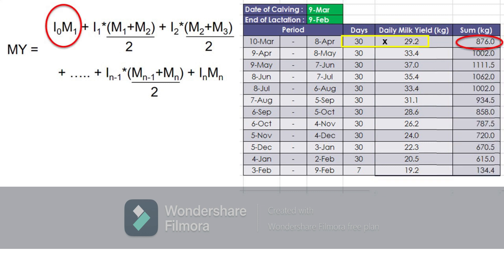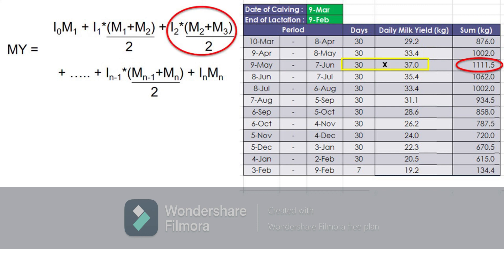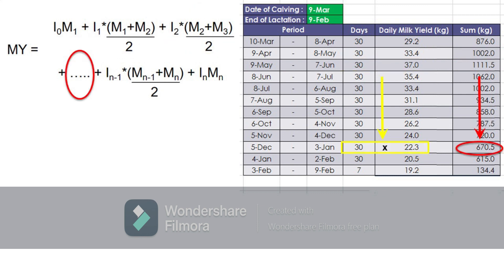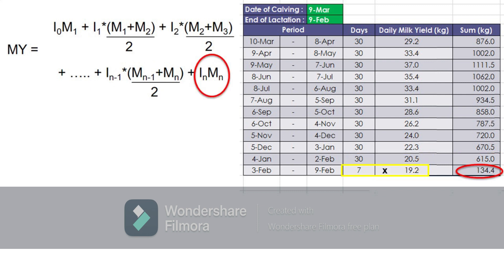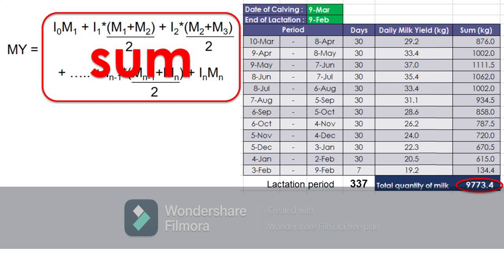The total milk yield within each specified period is calculated as the product of the interval in days and the corresponding daily milk yield for the period in kilograms. Getting the sum of all the calculated yields gives the estimated total quantity of milk yield of 9,773.4 kilograms throughout the 337-day lactation period.